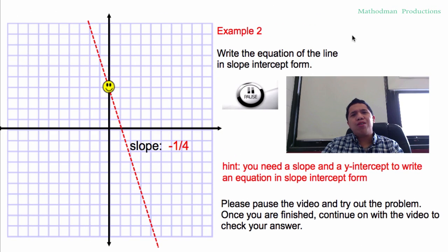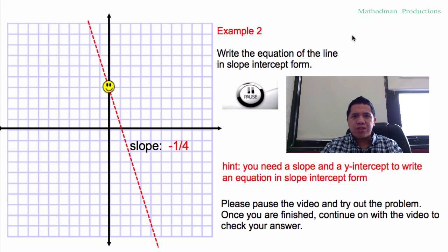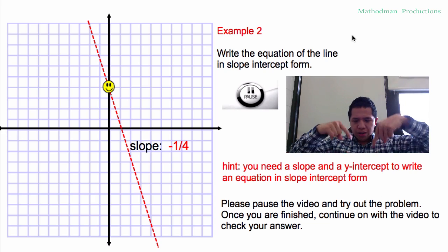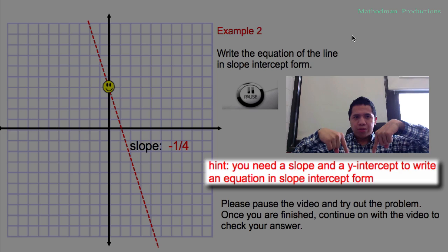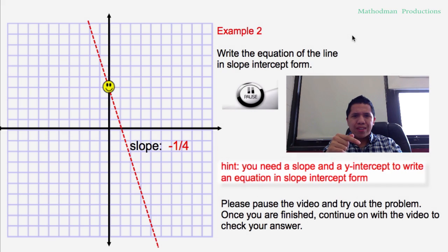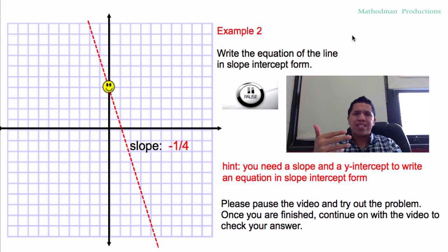Please pause the video and try out example two. It looks a little different, but remember you just need two things: a slope and a y-intercept. If you get stuck, read the little clue below. If you haven't noticed, the slope is usually next to the x in slope-intercept form.